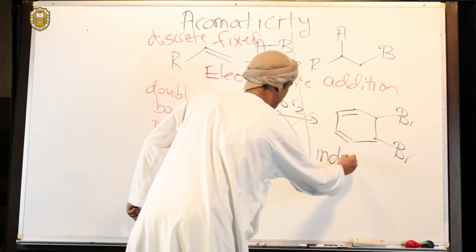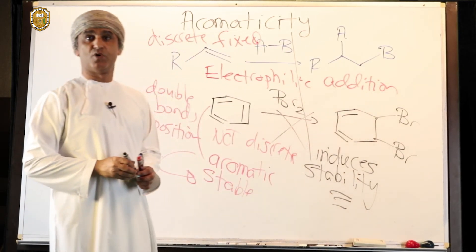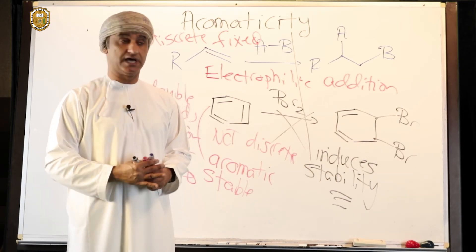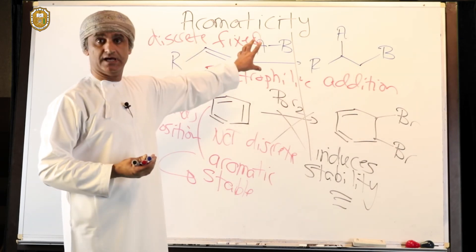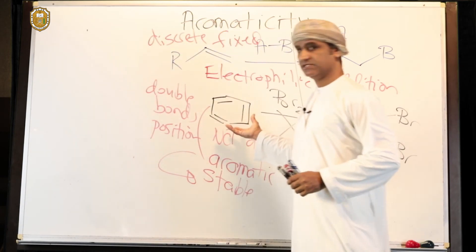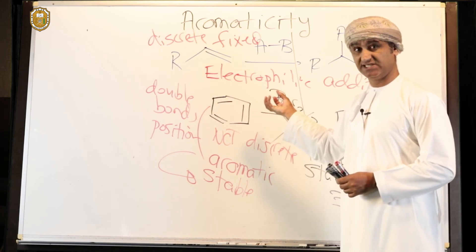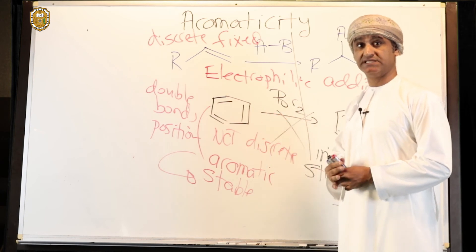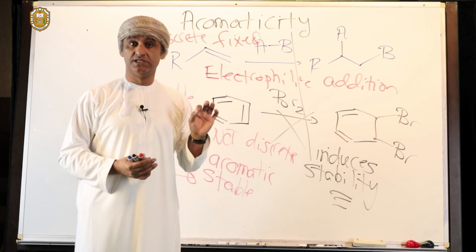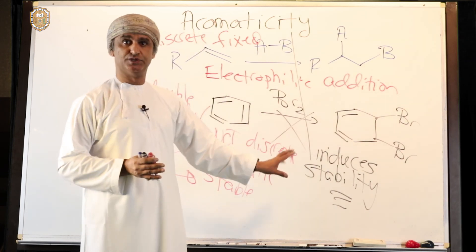The bottom line is that aromaticity induces stability. Any aromatic compound is very, very stable and is resistant to easy reactions. A reaction between an alkene and a halogen as an electrophile would be a quick one — alkenes undergo electrophilic addition reactions. Whereas benzene does not undergo such a reaction because benzene is very stable. The positions of double bonds are not discrete or fixed, because benzene is aromatic and aromaticity induces stability through a strong, continuous cyclic conjugation inside the pi system of the benzene ring.